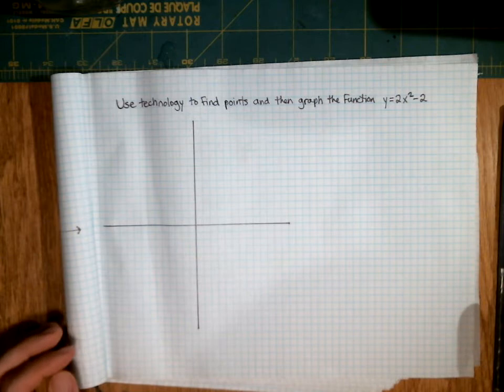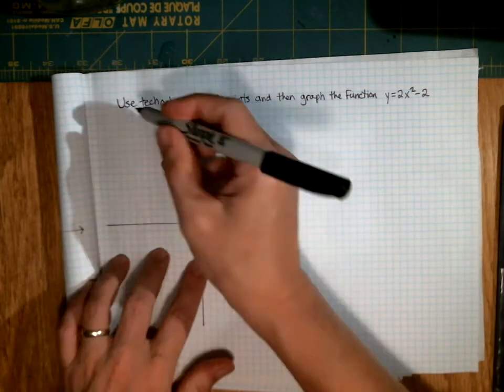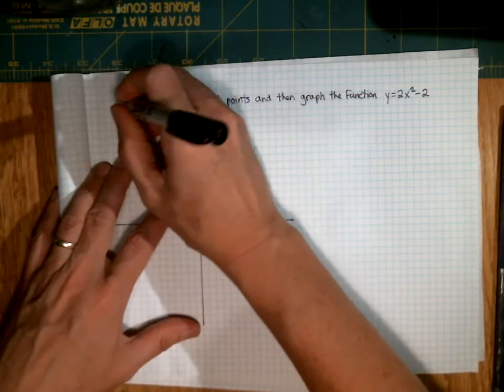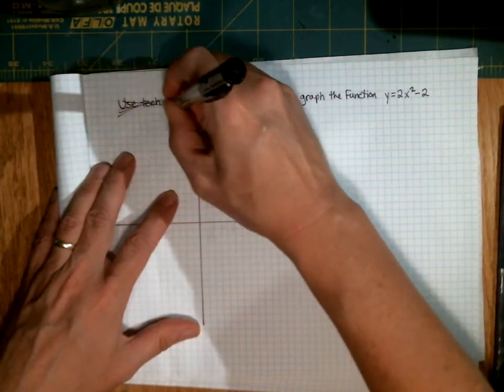The instructions are use technology to find points and then graph the function. And we are not going to be using technology because we can do it a lot faster by hand.